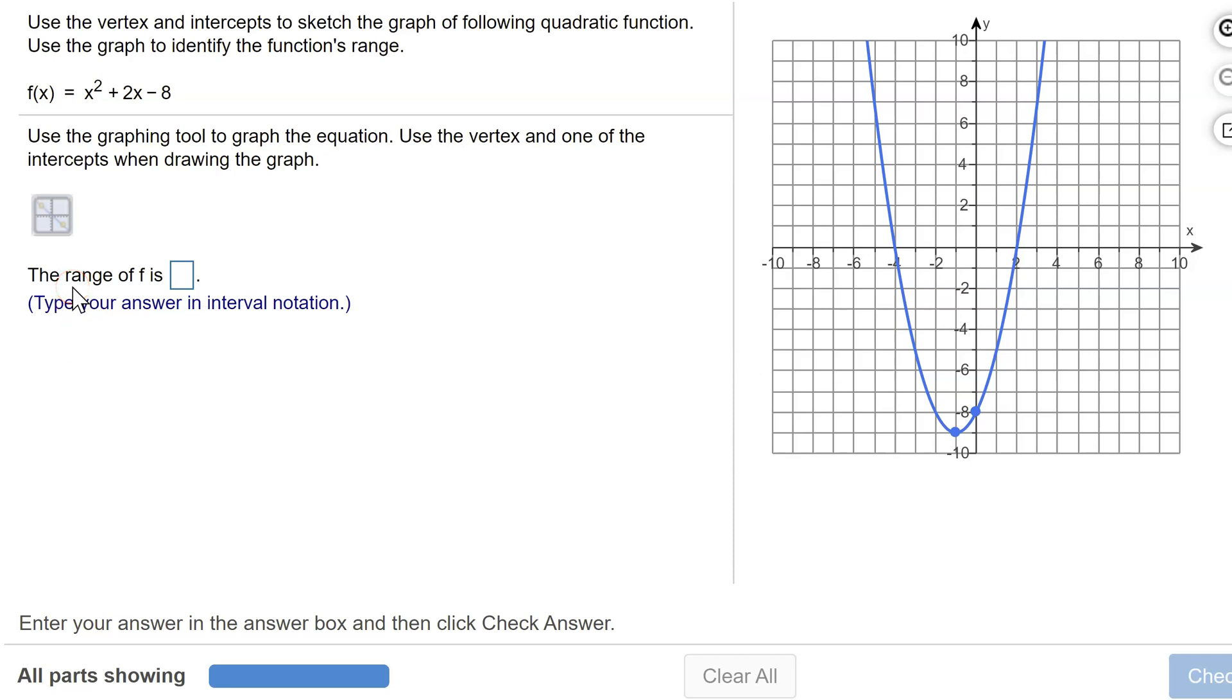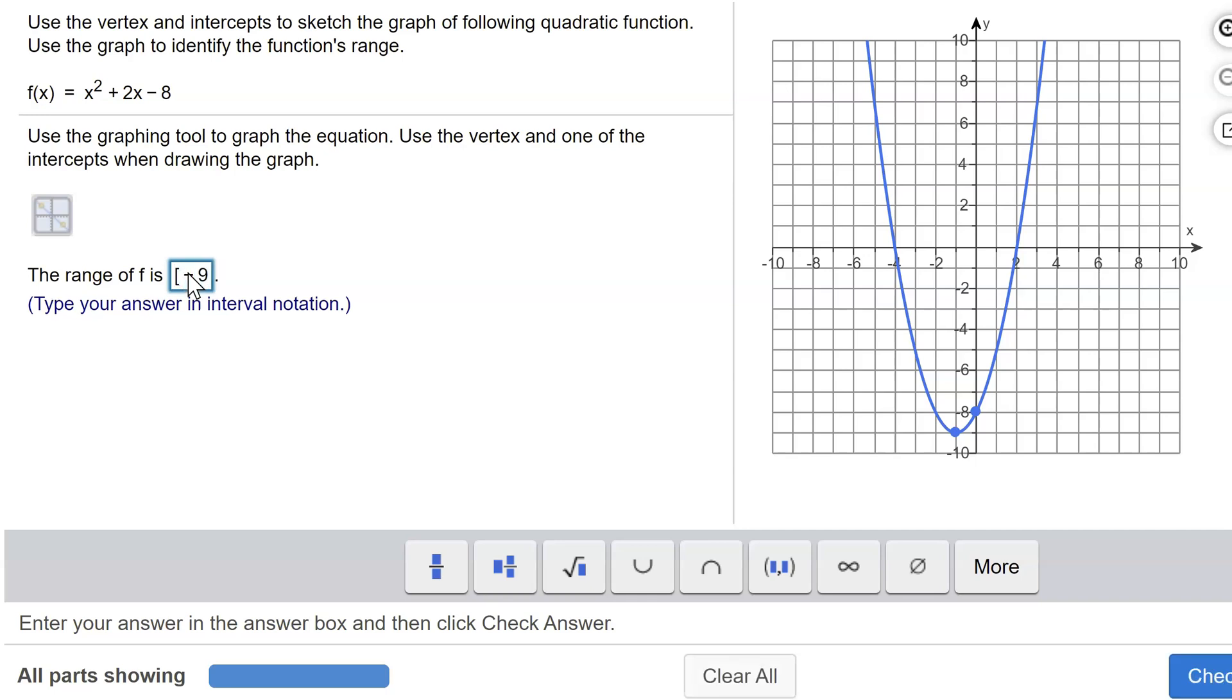Then we go on to part 2 that asks for the range. The range is the y values. What's the smallest y value we come across as I come up from negative infinity? The smallest y value is -9, and there's a point there, the vertex. So I have to use a square bracket, [-9, and now my range is going to go all the way up to positive infinity, which you have to put a parenthesis on. So now I can check the answer.